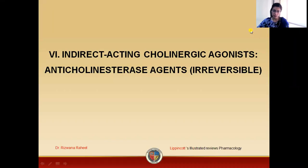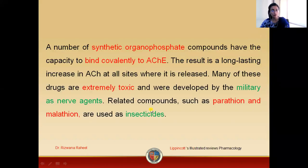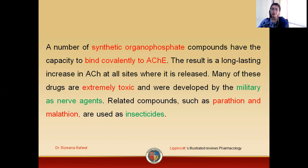In today's lecture, we are going to study a drug that is ecothiopate. Ecothiopate is basically an indirectly acting cholinergic agonist — that is, it is an irreversible anticholinesterase agent. We'll get into detail of the drug ecothiopate, which is basically an organophosphate.